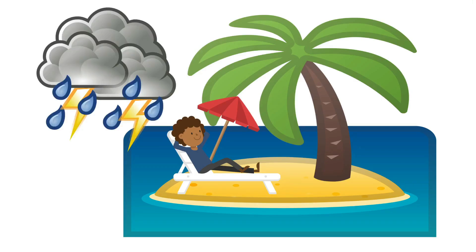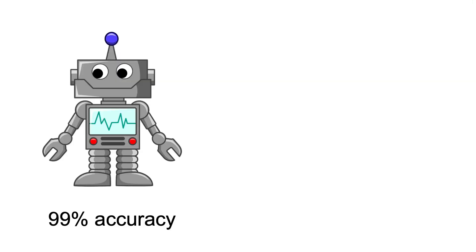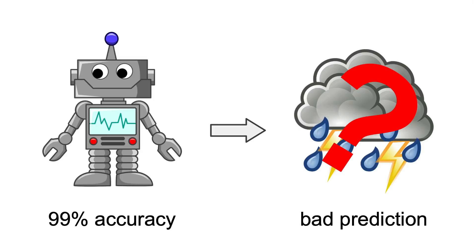You wait for the weather to calm down — you wait and wait — but at a point you get angry, so you check their weather forecast model and see that it has a 99% accuracy. Now you start wondering: how is it possible for a model with 99% accuracy to give such a bad weather prediction? It told you that it would be sunny today and it has been raining for several hours since you arrived.